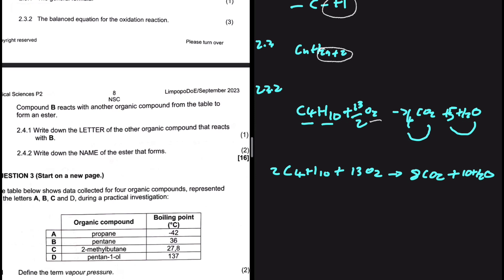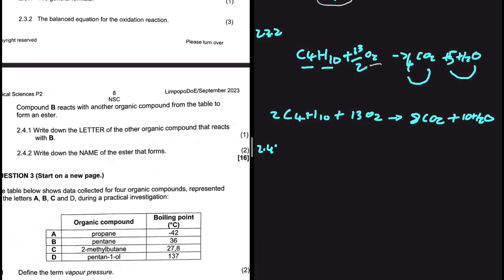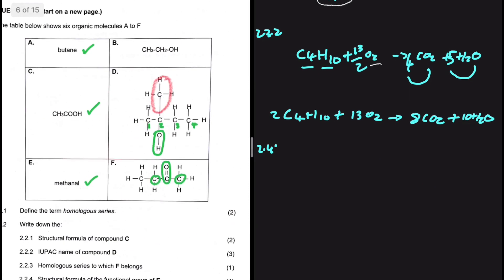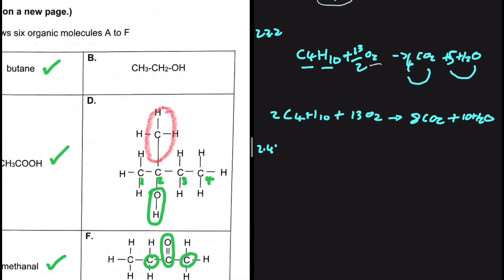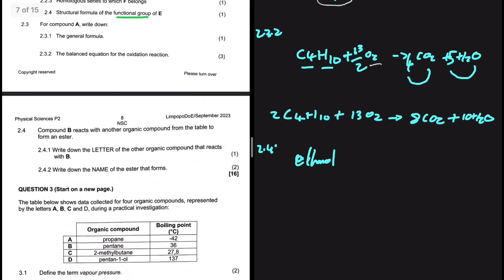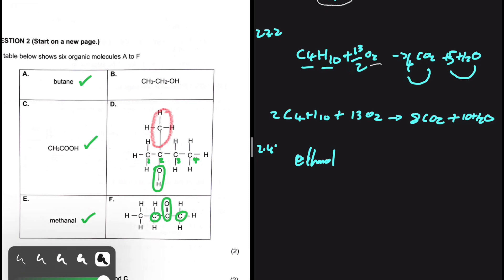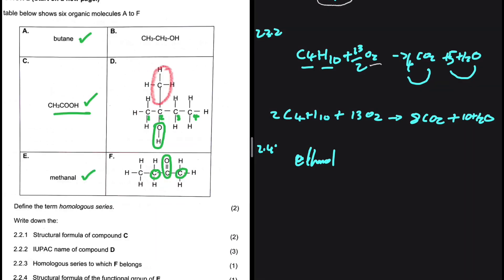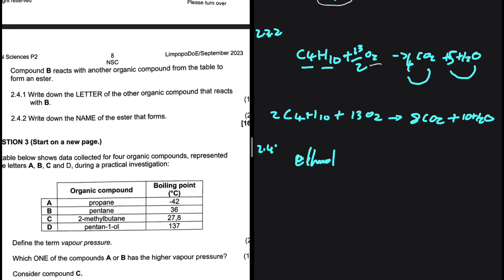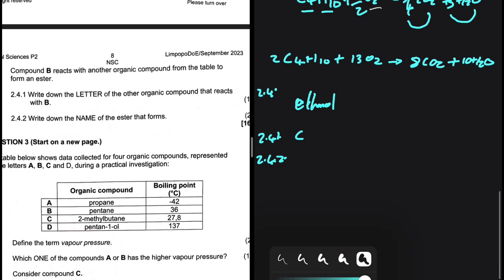For 2.4, compound B reacts with another organic compound from the table to form an ester. Compound B is CH₃CH₂OH — that is ethanol. To form an ester we need an alcohol and a carboxylic acid. Looking at the table, the only carboxylic acid present is ethanoic acid, which is compound C. So compound B reacts with compound C, and the answer to 2.4.1 is C.